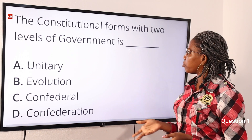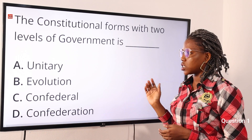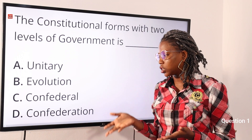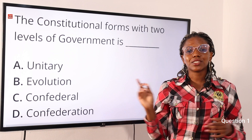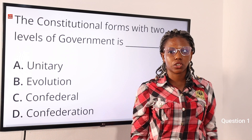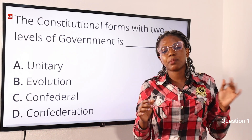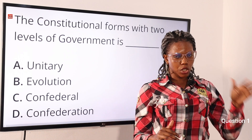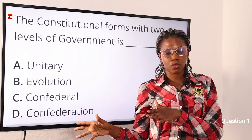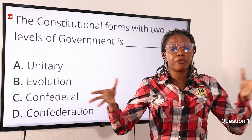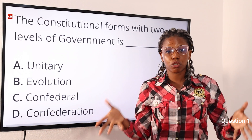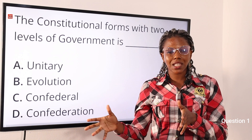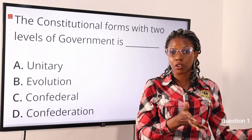Question one: the constitutional form with two levels of government is — option A: union, option B: devolution, option C: confederal, option D: confederation. The answer to this question is confederation. Confederation is a system of shared powers between two levels of government: the central government and the local levels of government, which is made up of confederal states, that is, different countries.